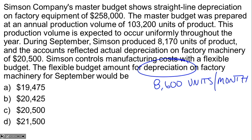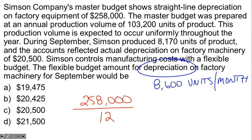Because depreciation is a fixed cost, it's going to be the same number on every flexible budget, as long as we stay within the relevant range of production where fixed costs remain fixed. Whether the company produced 8,600 units, 8,000 units, or 9,000 units, depreciation stays the same in the flexible budget. So all we need to do is take the annual depreciation of $258,000 and divide by 12 months, giving us $21,500 per month. Choice D is correct.